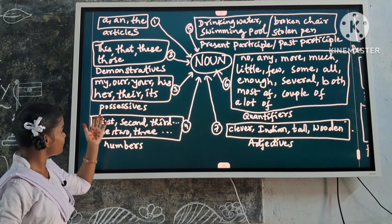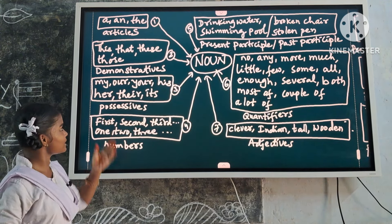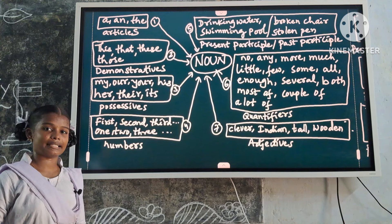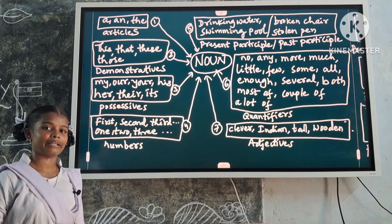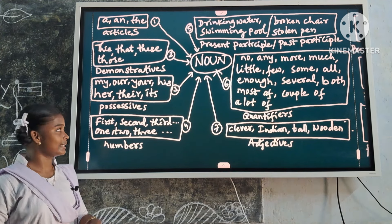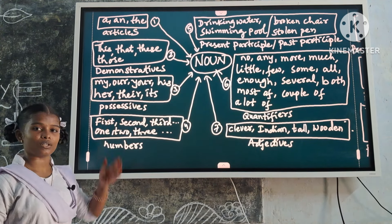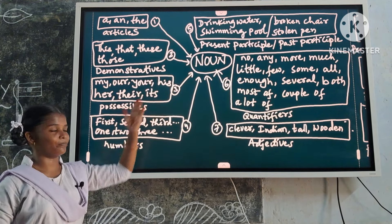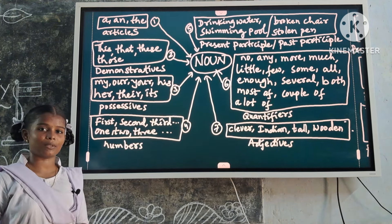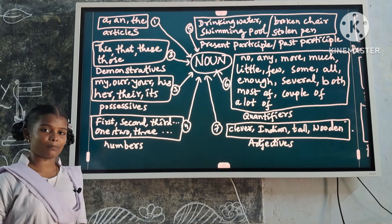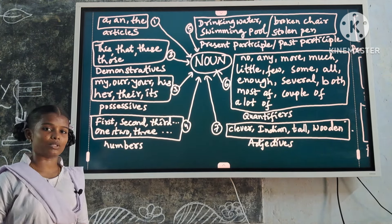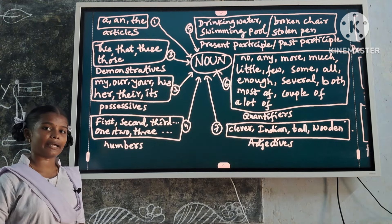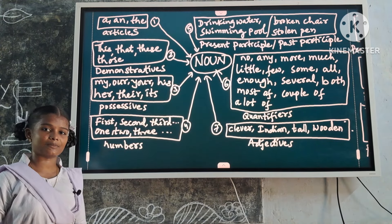Next one: possessives — my, our, your, his, her, their, its. These are noun modifiers because they describe the noun. Examples: my book, our book, your book, their books, his book, her book, its book.